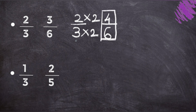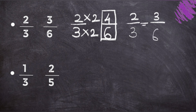But the fraction given is 3 upon 6, not 4 upon 6. That means 2 upon 3 and 3 upon 6 are not equivalent fractions.